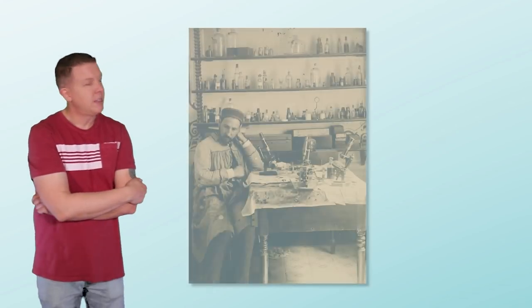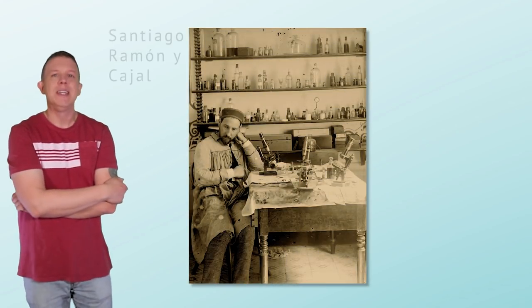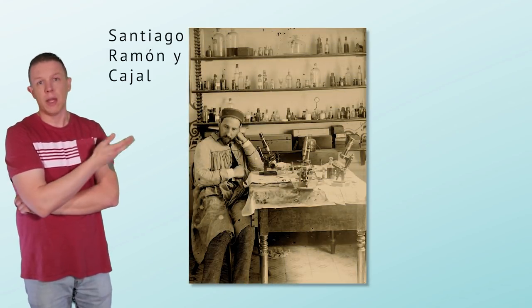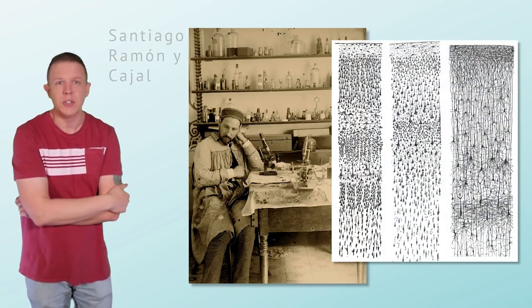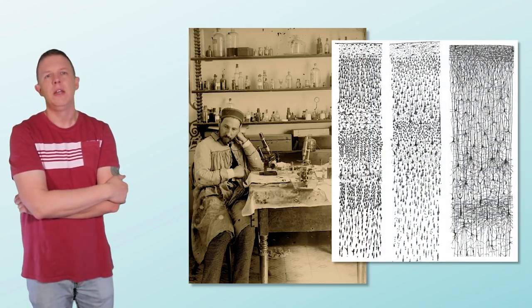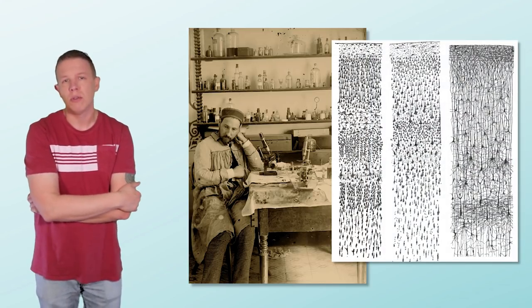We've known about layers in the cortex for over 100 years. Here's Santiago Ramón y Cajal at his microscope. He created hundreds of beautiful illustrations of the brain, including this one displaying neocortical layers. In this episode, I'm going to define the structures of the cortex that enable intelligence. But first, a quick primer.